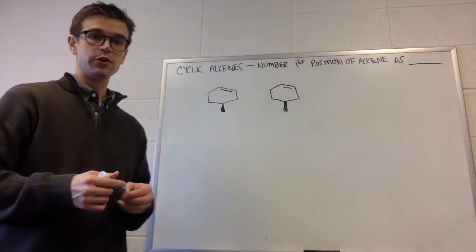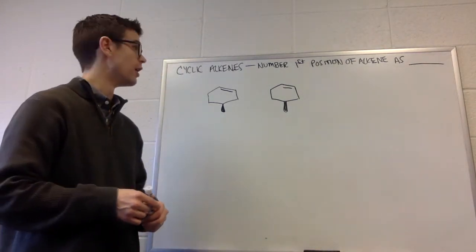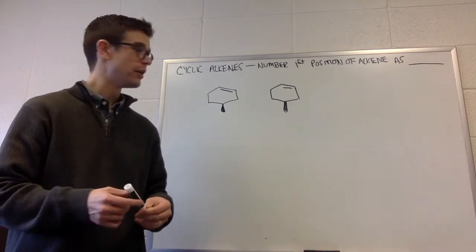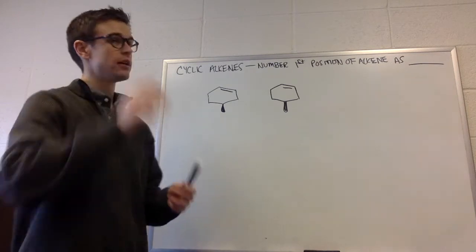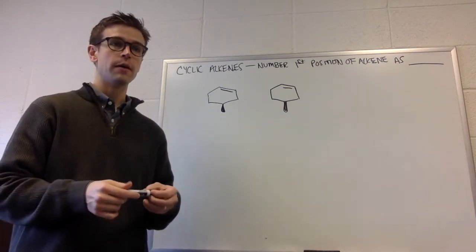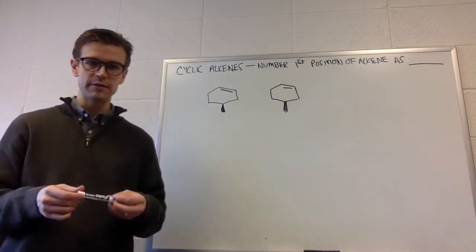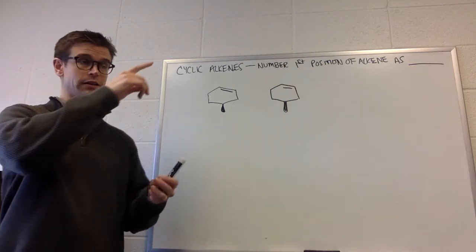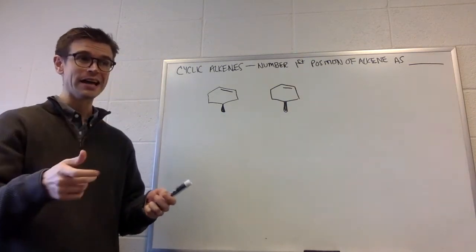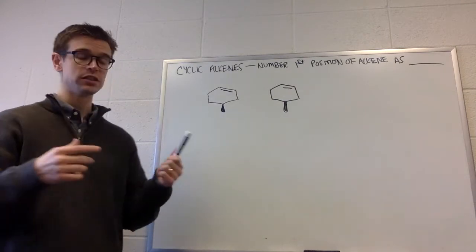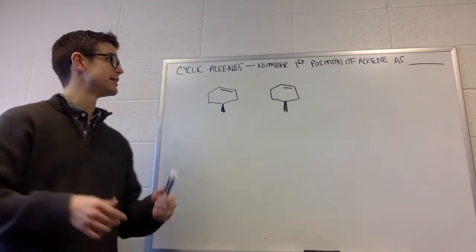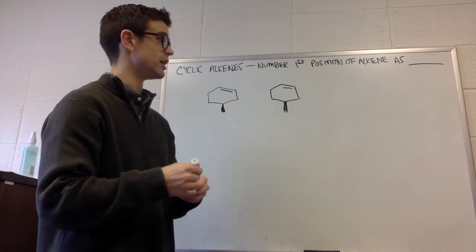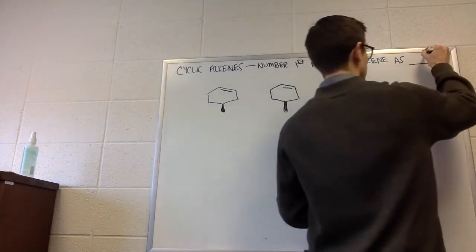All right, so now we're going to do cyclic alkenes, and this follows the same rules as the stuff from above, except that now we're in a cyclic system. We don't really need to specify the position of the alkene as blank-dash-EN because it's just expected that you're going to number the first position of the alkene as number one.